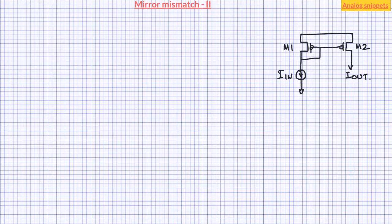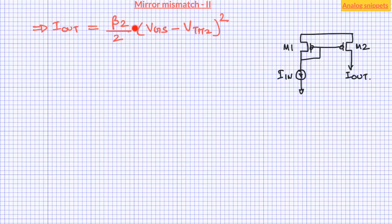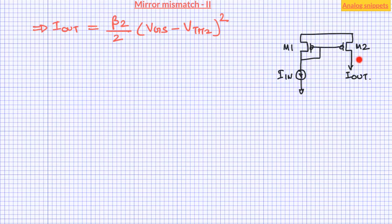Let's understand the contributions of transistor M1 and M2 in the total variation of current I_out. Variation in current factor beta and threshold voltage V_th are responsible for the variation of I_out. We brushed the factor V_gs aside by saying there is no mismatch in V_gs between M1 and M2. While it is correct that they do not have different V_gs, if we observe V_gs across different chips there is some variation in V_gs, and this variation contributes to the variation of I_out. So let's write the equation of variance of I_out including the V_gs term.